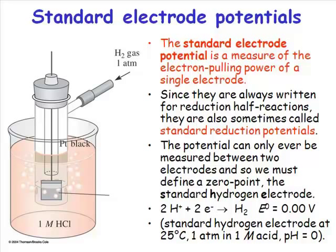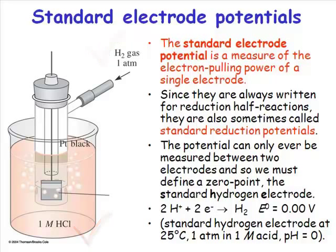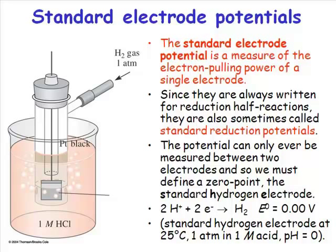We have to be very careful when talking about electrode potentials, because they are measured under very specific conditions, and changes to those conditions can very subtly change the electrode potentials you actually observe. Standard conditions for the hydrogen electrode are one molar hydrogen chloride solution and one atmosphere of hydrogen gas, and the electrode itself is a piece of platinum black. Typically, standard electrode potentials comprise solutions of one molar concentration, and if a gas is involved, it is present at one atmosphere.